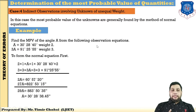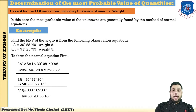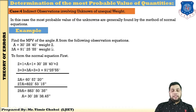Case 4: indirect observation involving unknowns of unequal weight. Similar to Case 3, the most probable value is found by the normal equation. First decide direct or indirect — here it is indirect because the angle is multiplied by a constant. But here the weight is unequal, so this is Case 4.